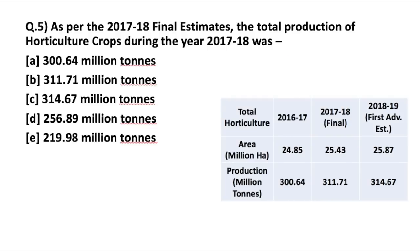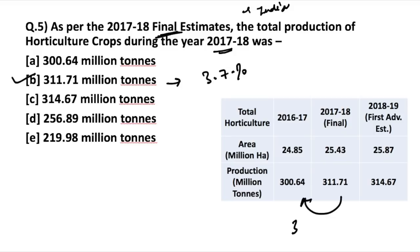The next question: as per the 2017-18 final estimates, the total production of horticulture crops was — according to the final estimates recently released by the Department of Agriculture, Cooperation and Farmer Welfare — 311.71 million tons, which is approximately 3.7% higher than the previous year.